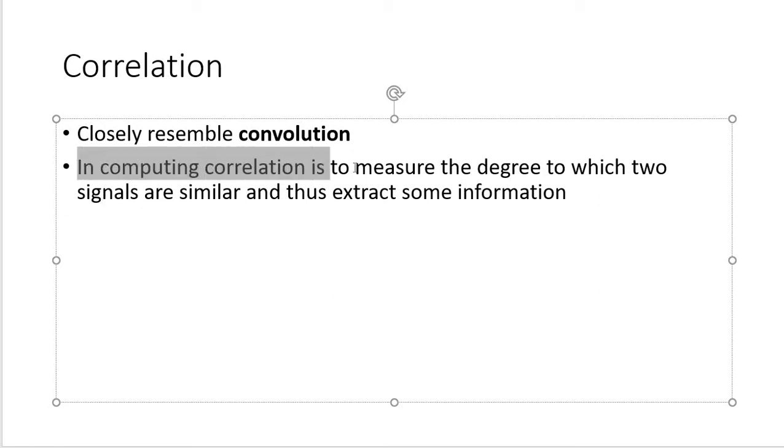In computing correlation, it is to measure the degree to which two signals are similar and thus extract some information. As you can see, the quote by Descartes is somehow similar that we need to find out the truth. That's why we're doing correlation, to extract some information.